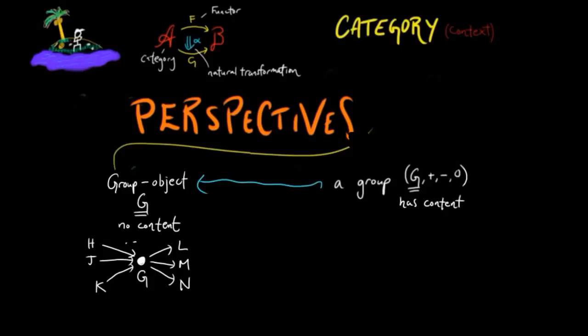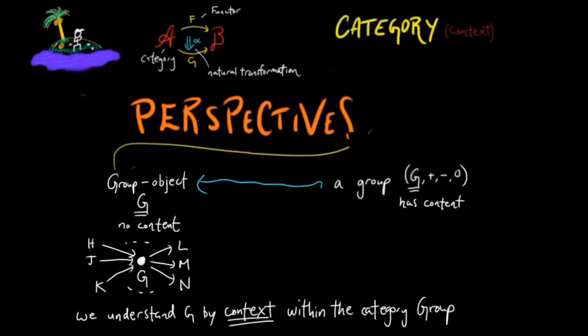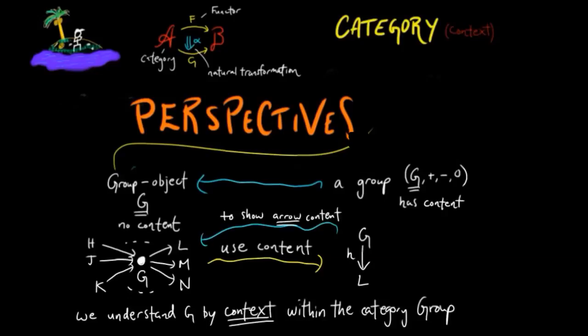In other words, we understand G by context within the category of groups. This does not mean content has no role in category theory. Of course, we need the content to show what context the object G takes. The point is that once this has been done, we can shelve the content and focus instead on the relations.